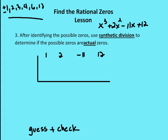Now we're going to set up our synthetic division system. We place the coefficients in order: 1, 2, negative 11, and 12. Then we guess and check each of the possible roots to see if the resulting value at the end is zero. If the last value is zero, then the value placed in as a divisor is a zero of the function.